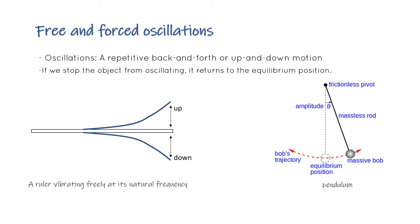So what do you mean by oscillation? We've been seeing oscillation everywhere. Even while riding on a bike, oscillation occurs - it goes up and down. Even a pendulum clock oscillates freely. So what is oscillation actually? In simple terms, an oscillating object moves back and forth repeatedly.